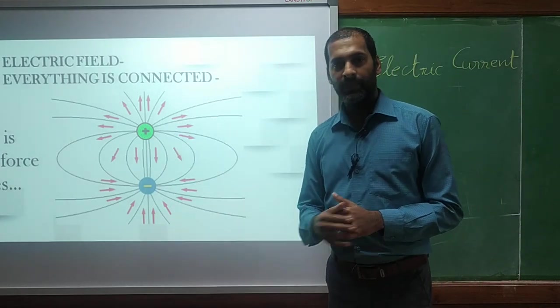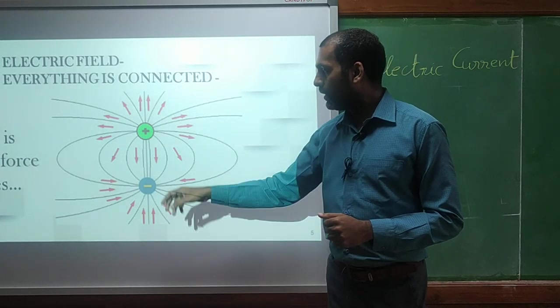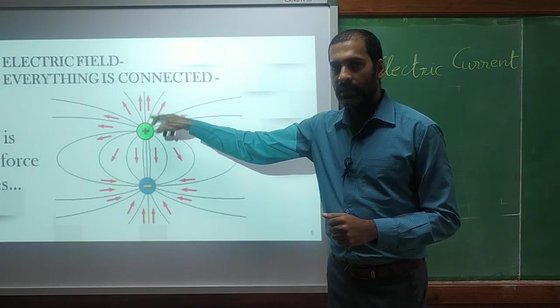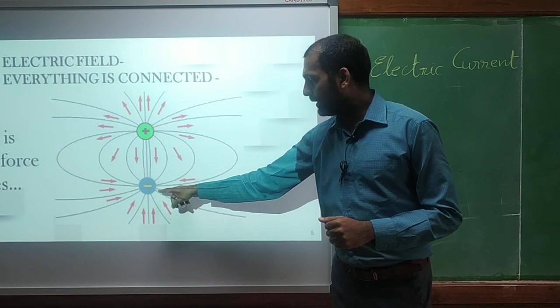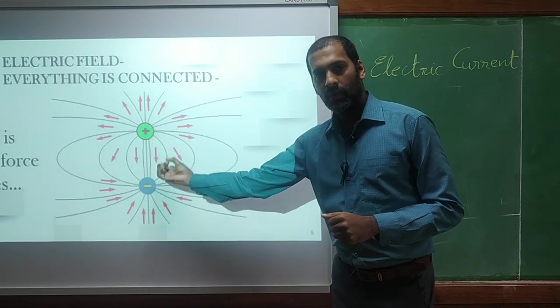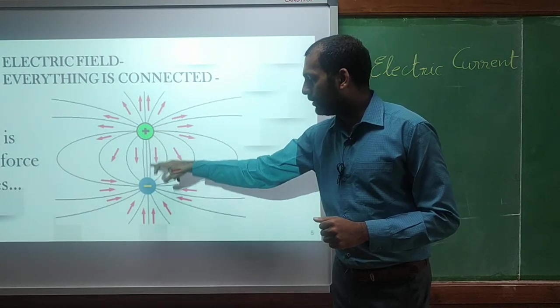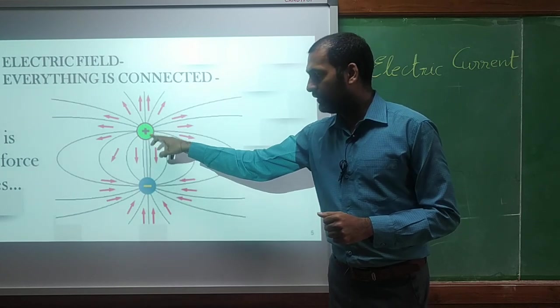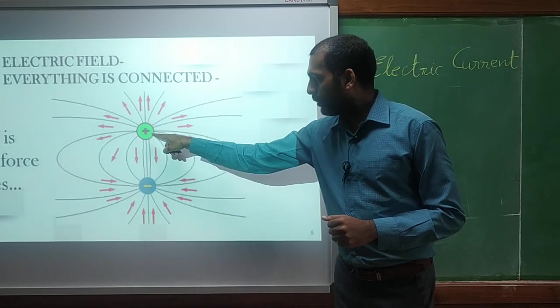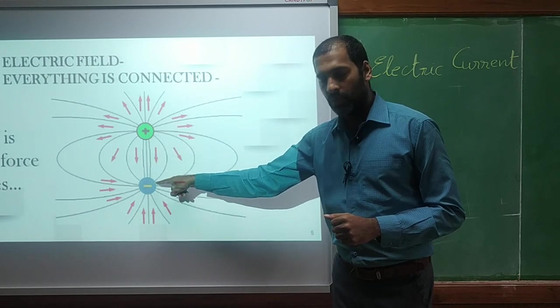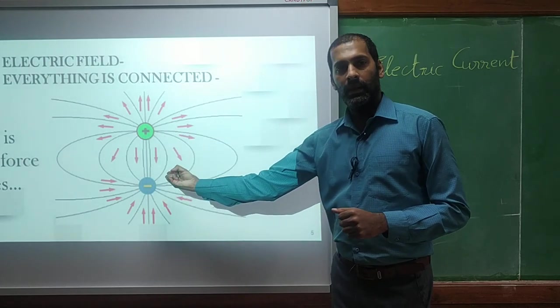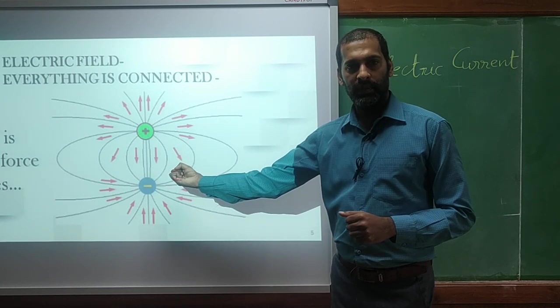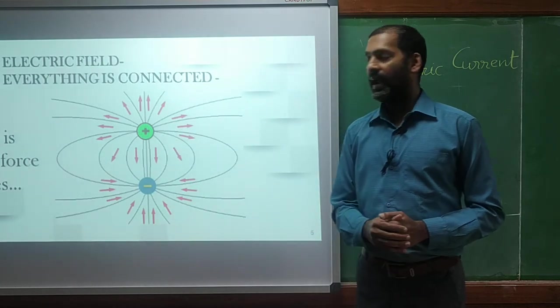Similarly, all the charges, they have some force line. For positive, the force lines go outward. For negative, the force lines goes inward. That's why when positive and negative charge comes closer, they get attracted with each other. So this positive is exerting some force towards negative. And negative is receiving that force. That's why they are getting more attracted.